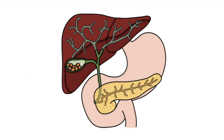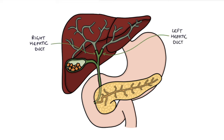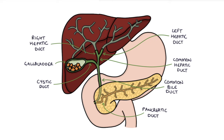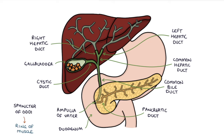Let's talk about the basic anatomy. The right hepatic duct and the left hepatic duct leave the liver and join together to become the common hepatic duct. The cystic duct from the gallbladder joins to the common hepatic duct halfway along its length. The pancreatic duct from the pancreas joins with the common hepatic duct further along. When the common bile duct and the pancreatic duct join, they become the ampulla of Vater, which opens into the duodenum. The sphincter of Oddi is a ring of muscle surrounding the ampulla of Vater that controls the flow of bile and pancreatic secretions into the duodenum.